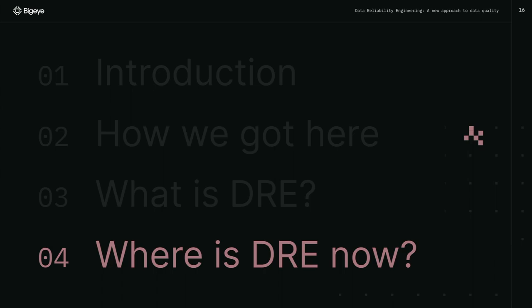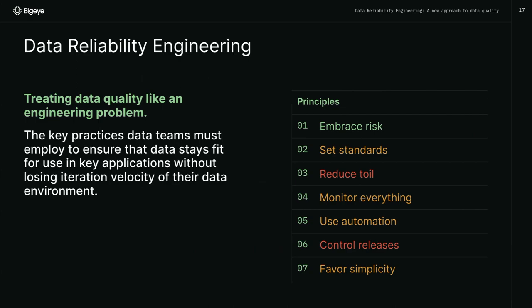DRE is a fairly new concept — where is it now? I've color-coded the principles based on my own feelings and observations in the data space about where we are around data reliability engineering. Embracing risk: I think everyone has at this point realized that data things will break — your dashboard will break, your machine learning model will break, your pipeline will fail. We as data practitioners have embraced risk and this is good.